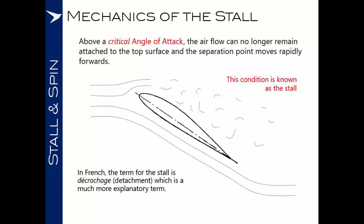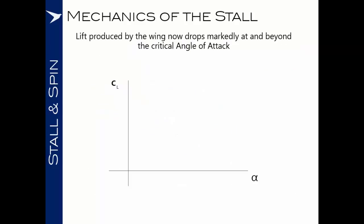It is this condition where the airflow is no longer attached to the top surface of the wing that we know as the stall. The French term for the stall is 'décrochage,' which means detachment — a far more satisfactory and explanatory term for what is occurring. At this point, the lift produced by the wing drops markedly. As we increase our alpha, the coefficient of lift increases, but as we reach the critical angle of attack, the lift produced by the wing drops rapidly.